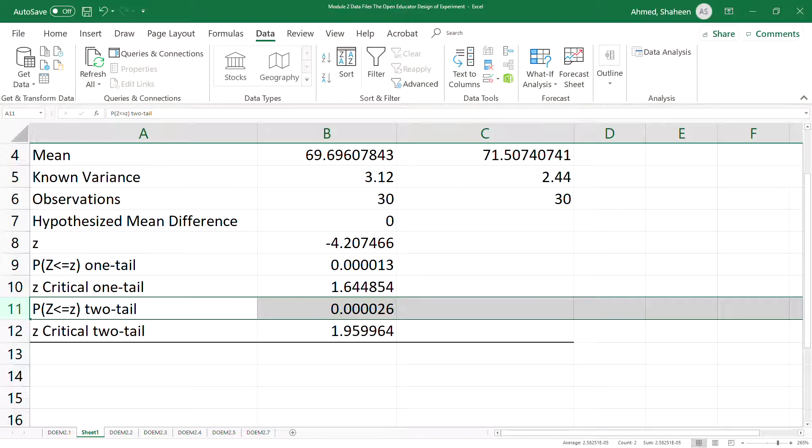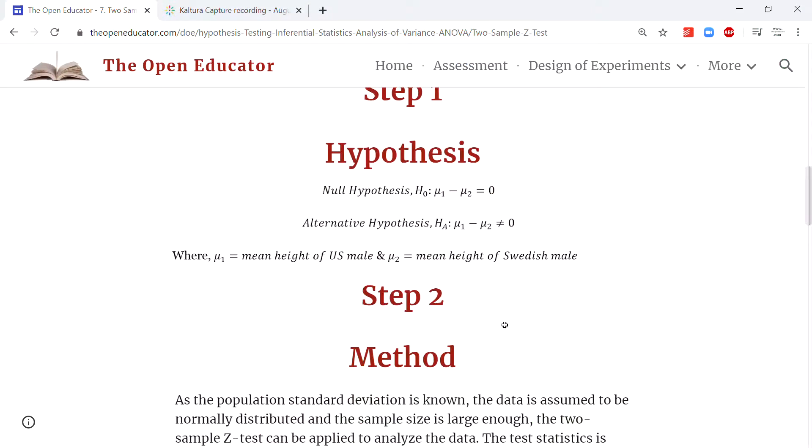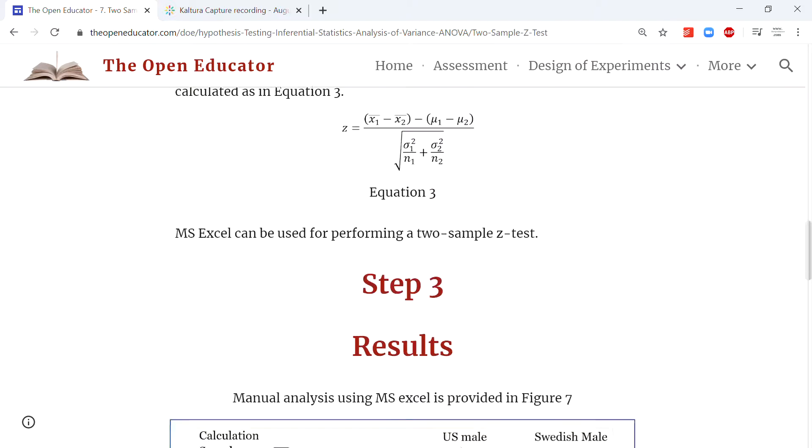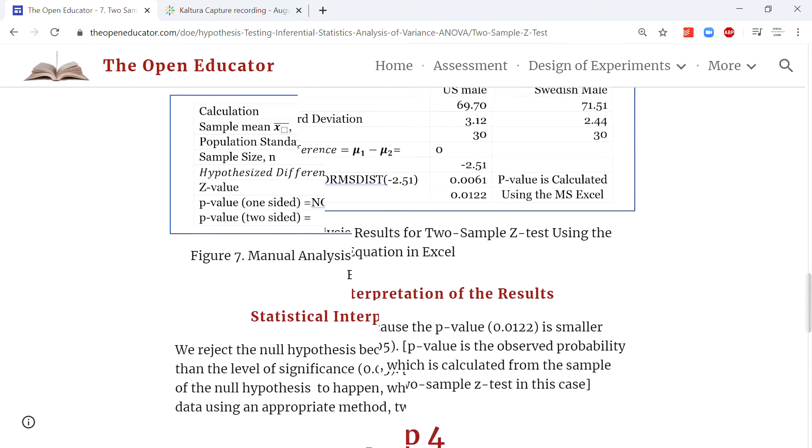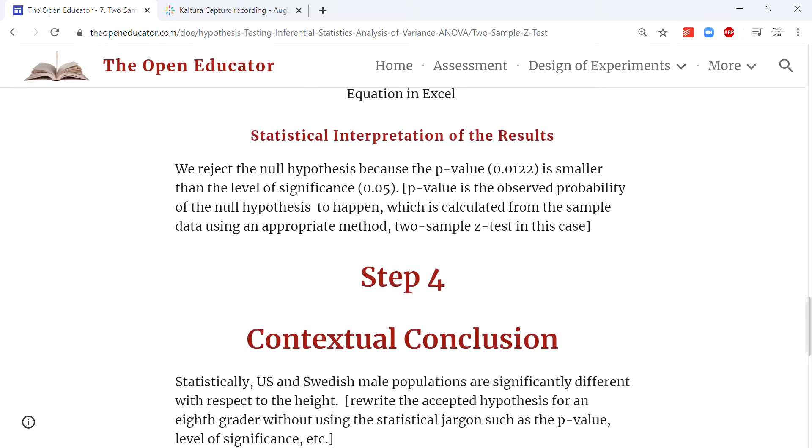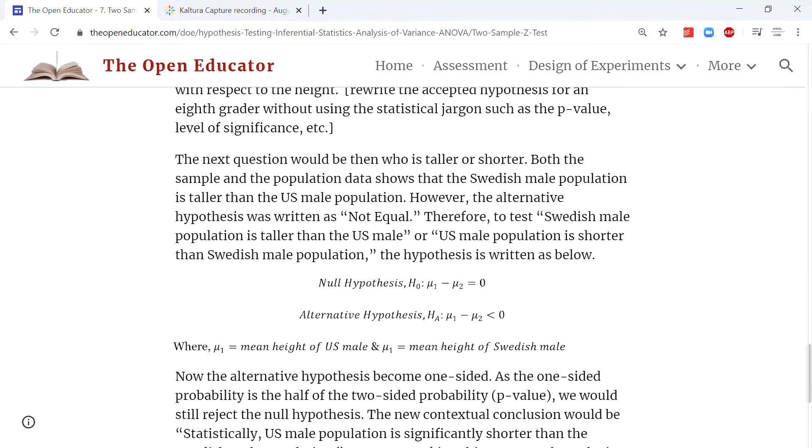The null hypothesis is that the mean difference between populations is zero. The p-value collected from the data is very, very low—almost zero. This means that the null hypothesis is unlikely, so we're going to reject the null hypothesis because the p-value is smaller than the level of significance. The conclusion remains the same.